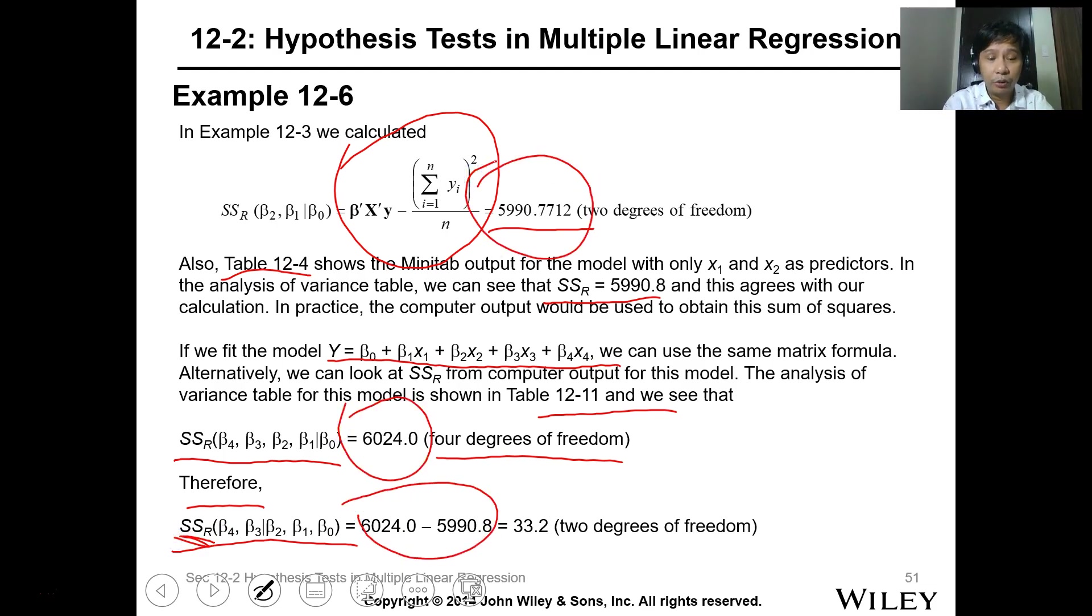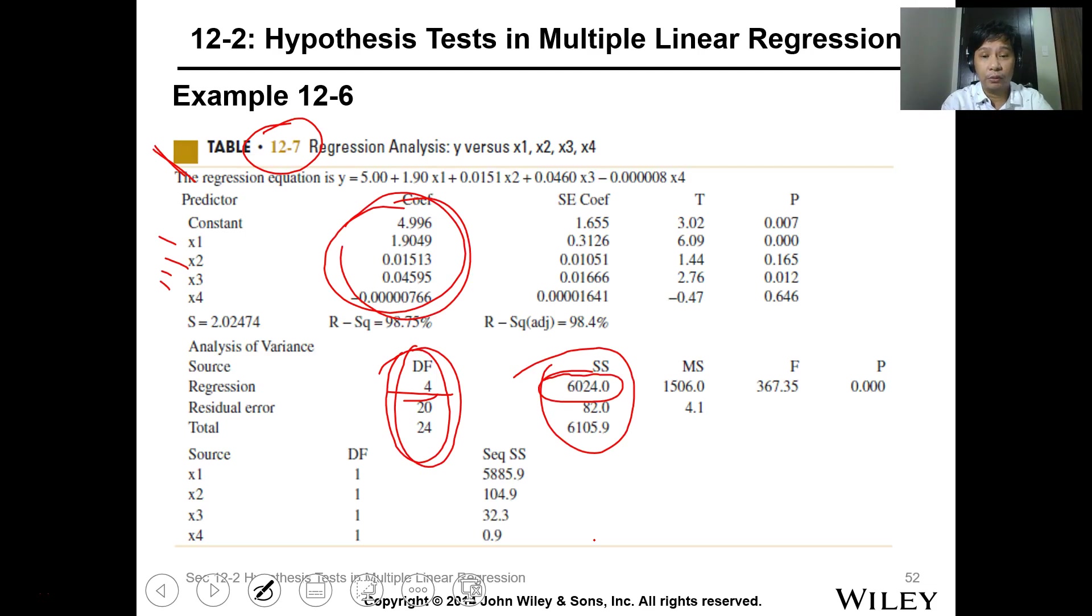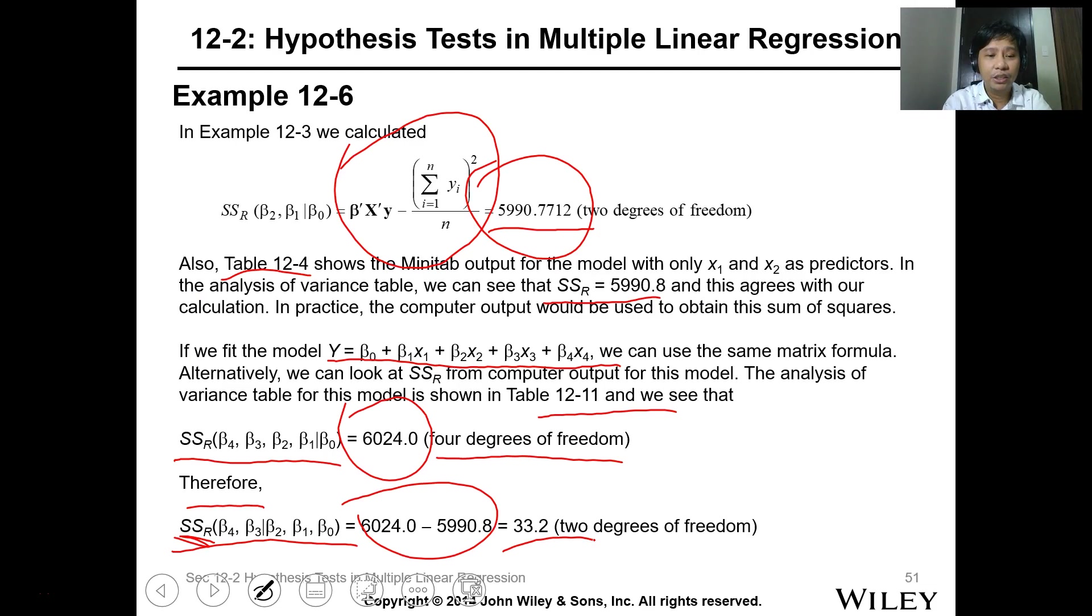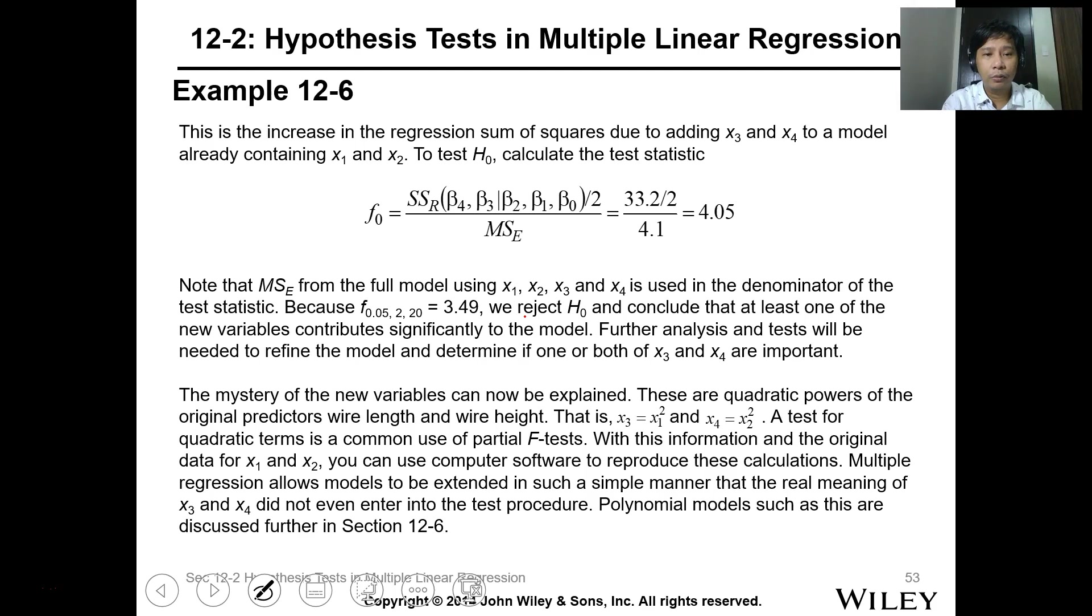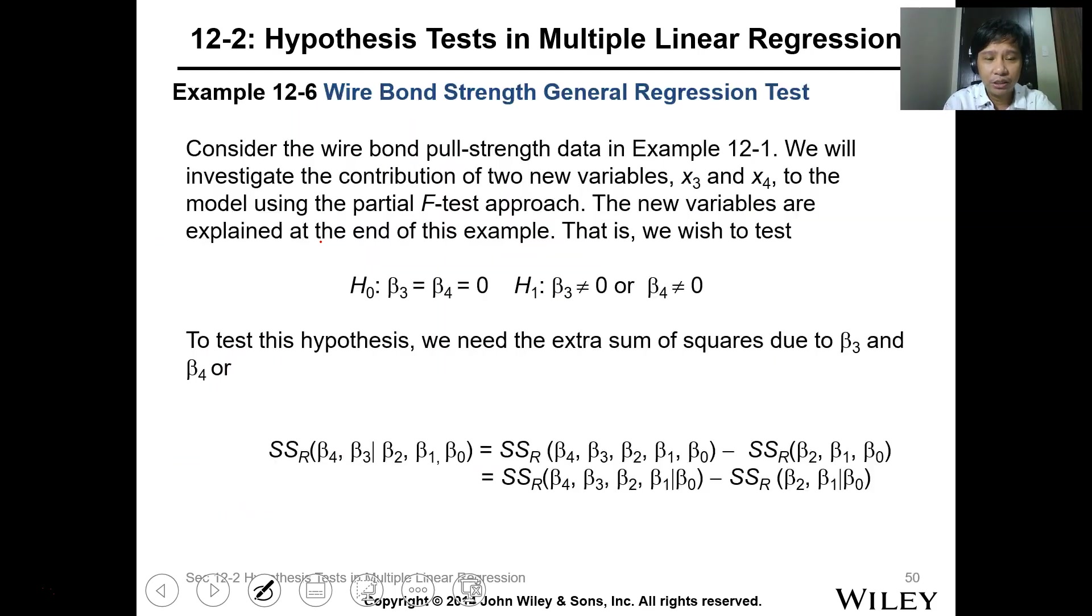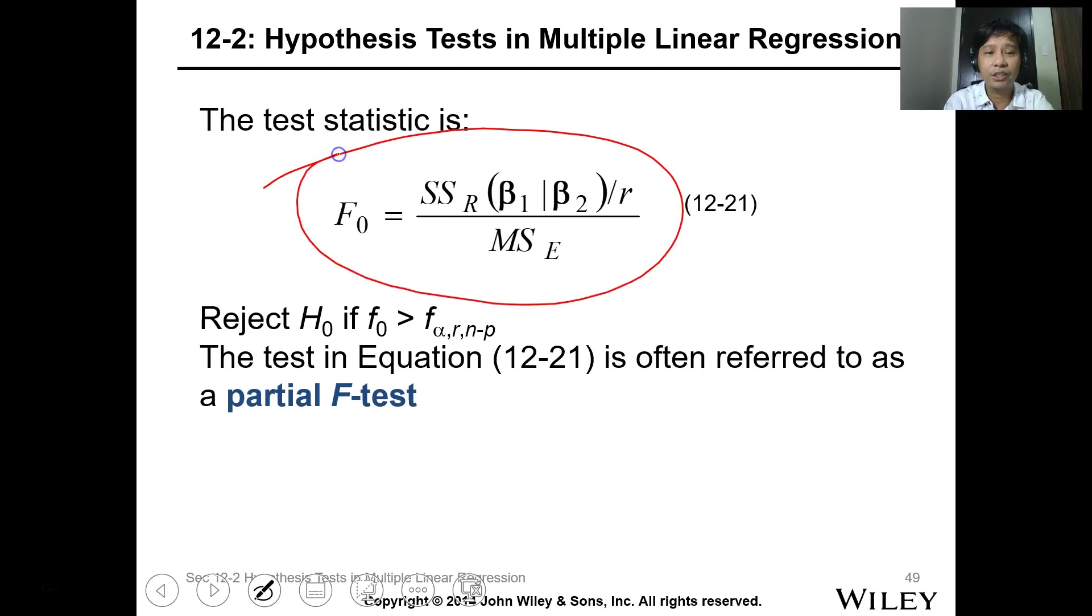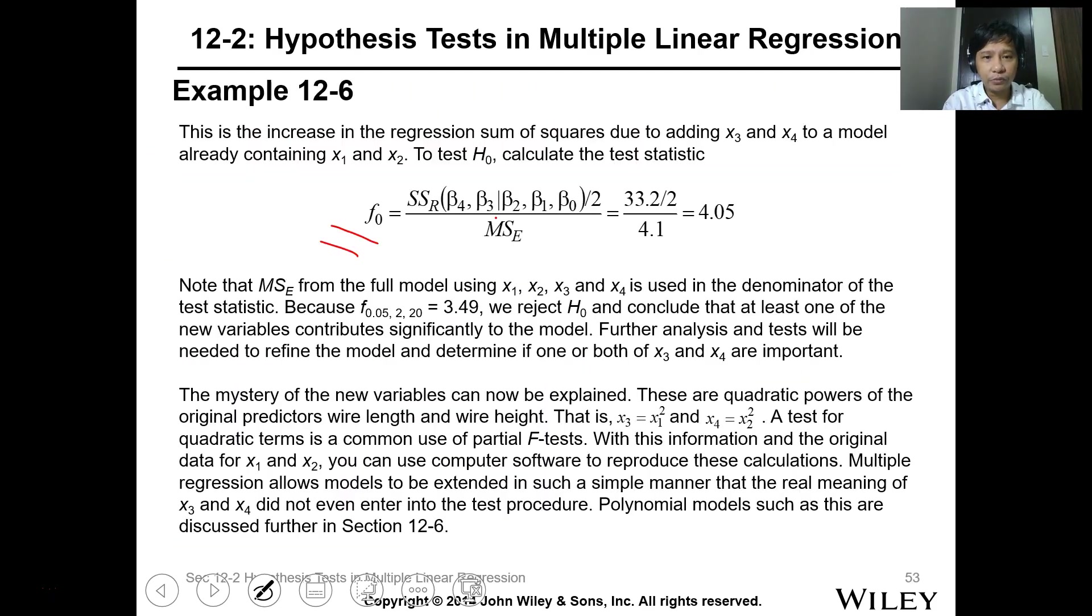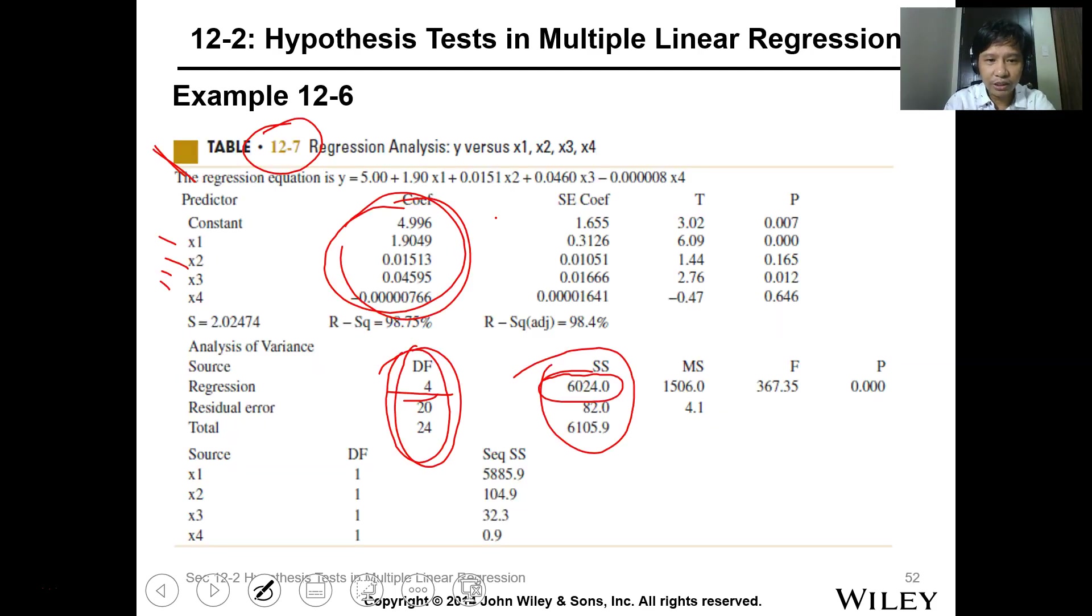Now, therefore, if we compute the SSR(β4, β3|β2, β1, β0), this is the SSR - you just subtract the two. So it becomes 32.20. So it's not here because this is a formula. What we want to test is just 3 and 4.